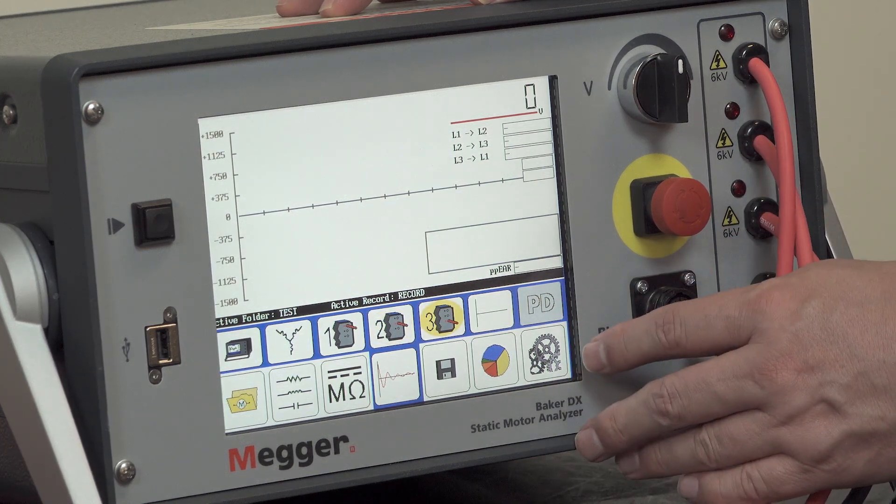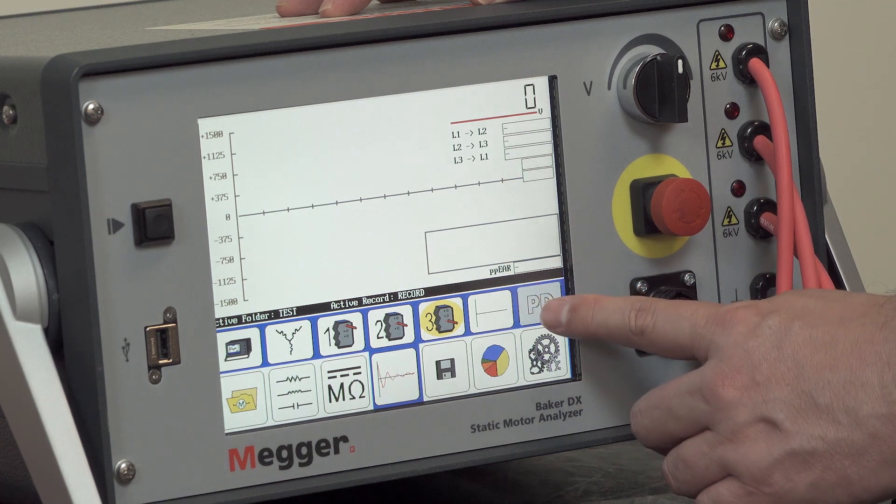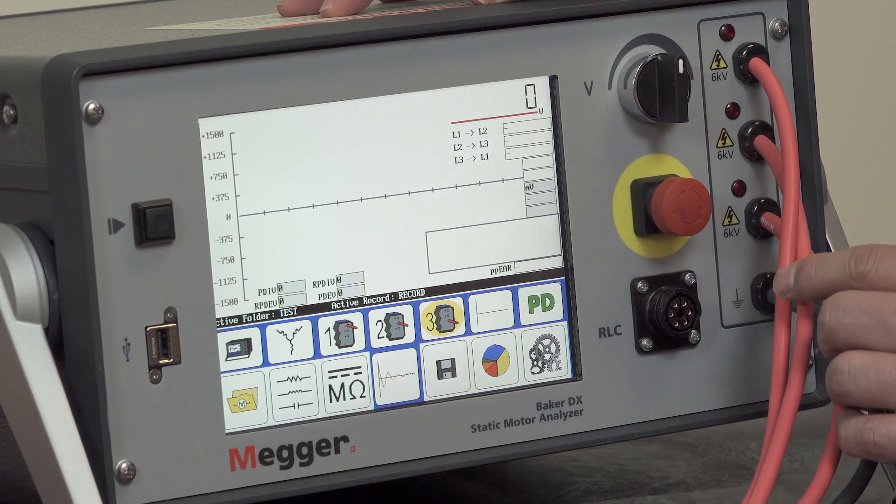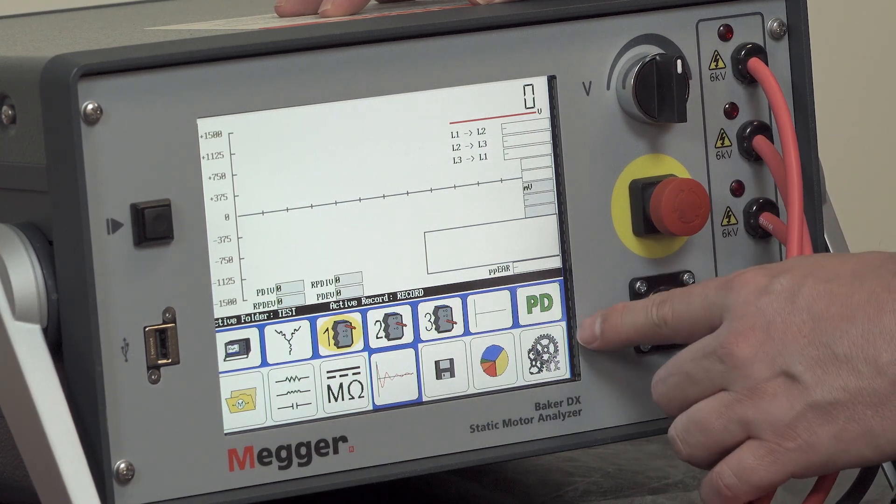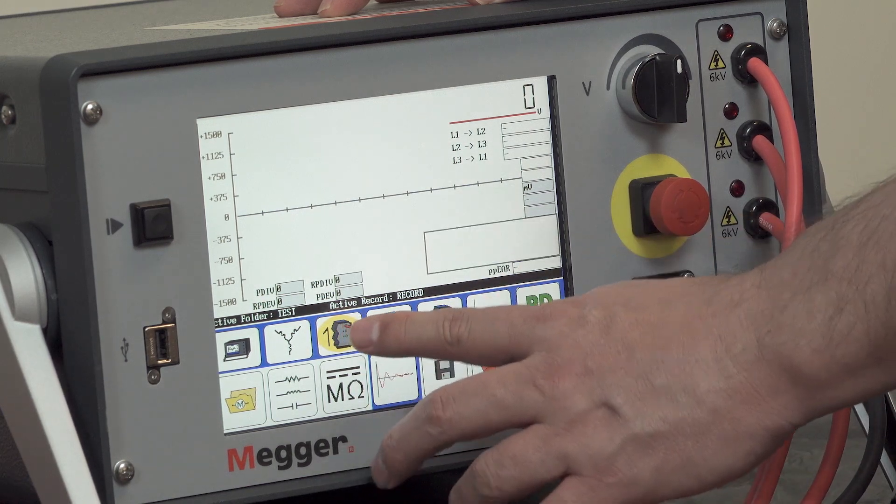If your Baker DX is equipped with the optional partial discharge module, you'll have another icon here that's labeled PD. It will highlight green when it's activated. In this state, partial discharge information is gathered during the normal surge operation.